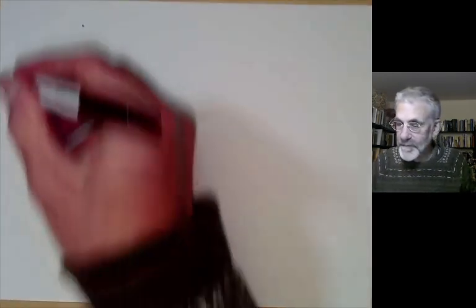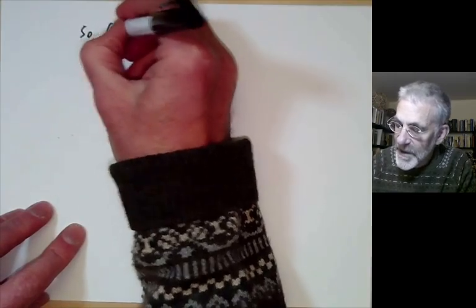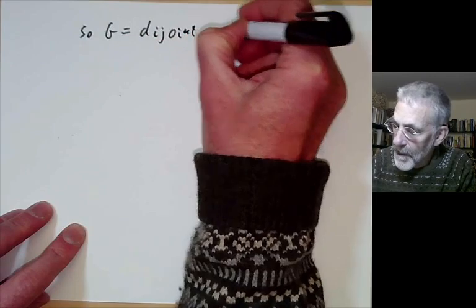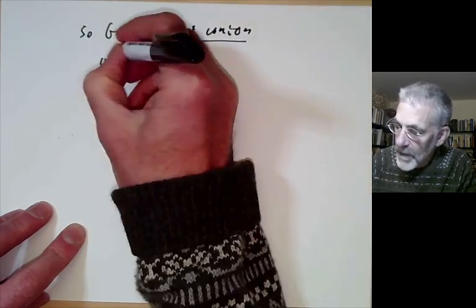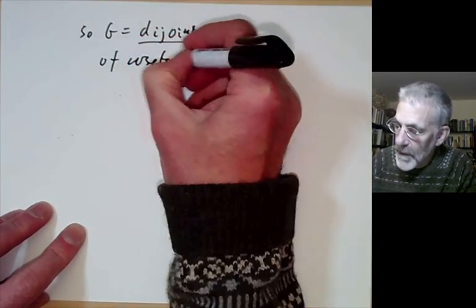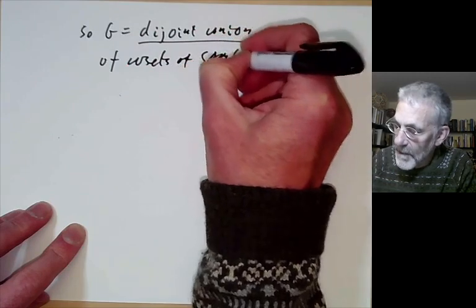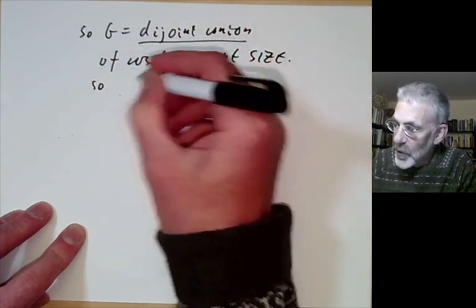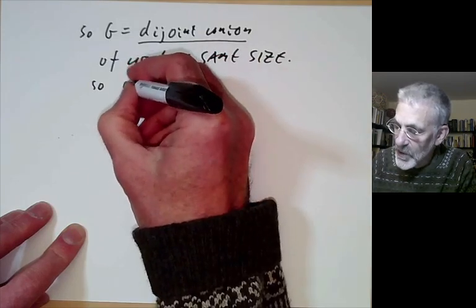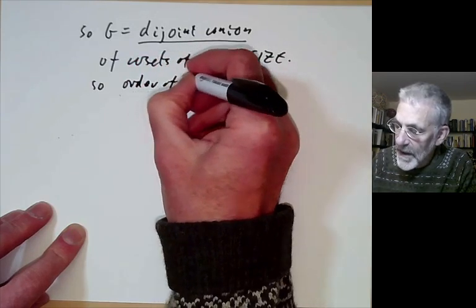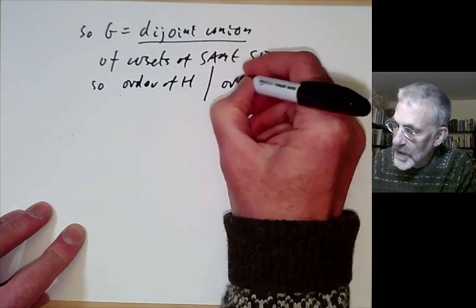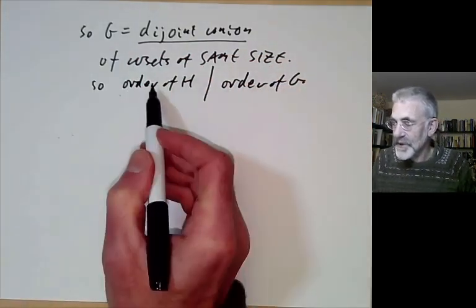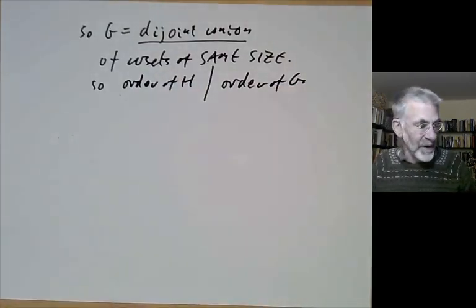So G is a disjoint union of cosets of the same size. The order of any coset — which is just the order of H — divides the order of G, because the order of G is just the order of H times the number of cosets.